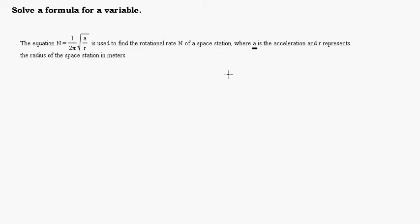What we're going to want to do is solve it for a particular variable. So let's go ahead and solve this for r. Right now it's solved for n — n is by itself. So what we want to do is make it say r equals.